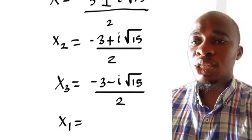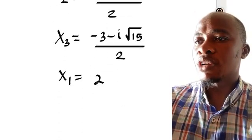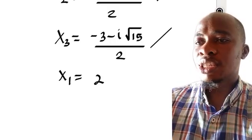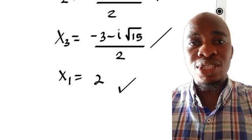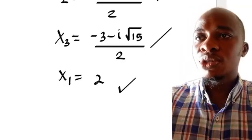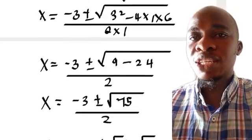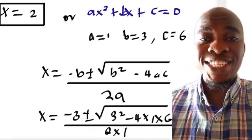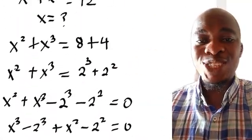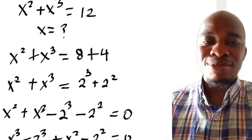So the real value is x₁ equals 2, and the other two complex solutions give us x₂ and x₃. These are the possible solutions to the problem. If you find the class very interesting, kindly share it with your friends so they can learn from it. Thank you so much for watching, bye.